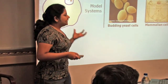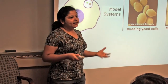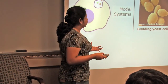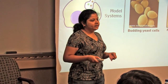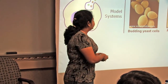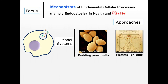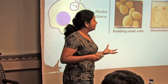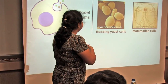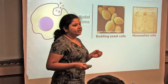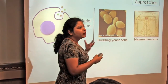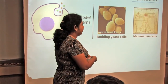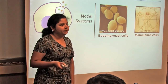Since we are cell biologists, we look at cells and try to understand these mechanisms. Cells can be obtained from a number of different organisms. In our lab, we work with unicellular organisms — budding yeast or baker's yeast that is used to make bread. Each sphere essentially represents one single cell. We also work with more complicated systems, like mammalian cells — for example, cells from human beings.